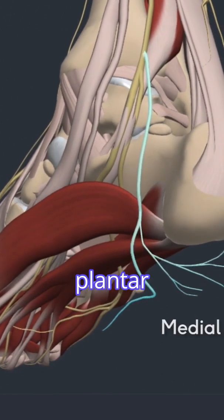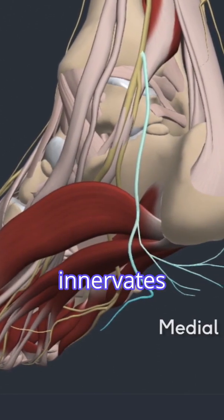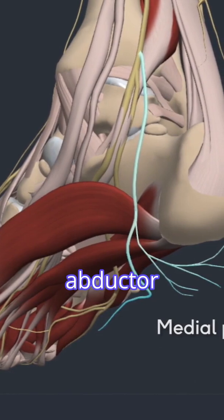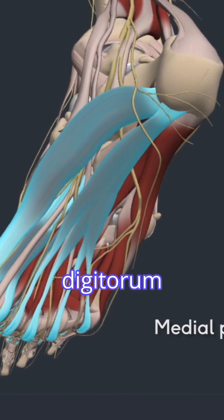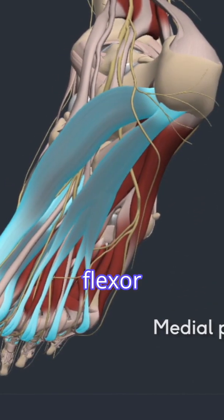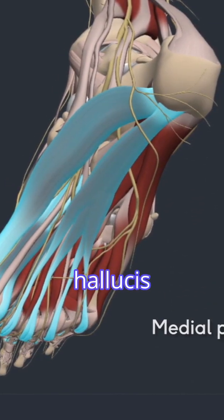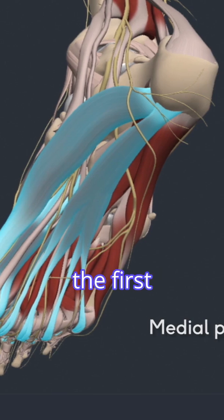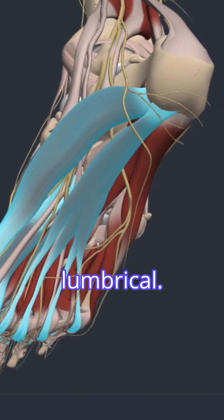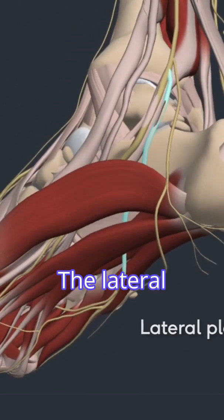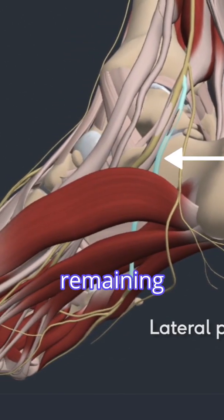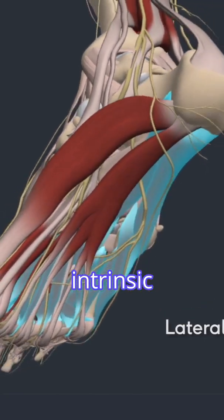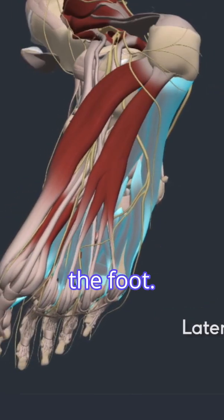The medial plantar nerve innervates the abductor hallucis, flexor digitorum brevis, flexor hallucis brevis, and the first lumbrical. The lateral plantar nerve innervates all remaining intrinsic muscles of the foot.